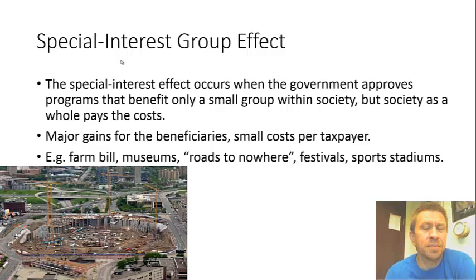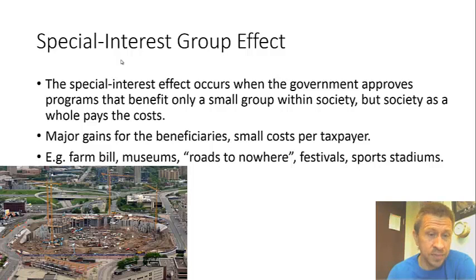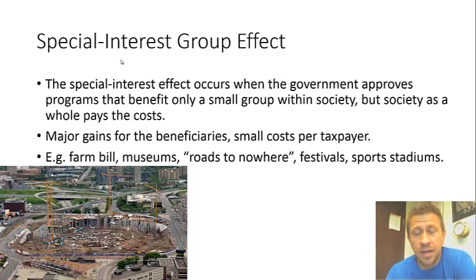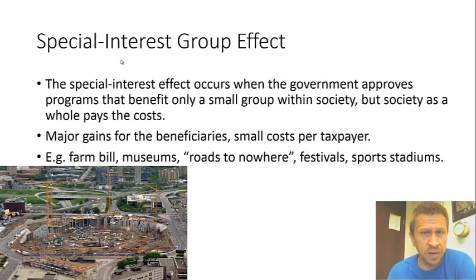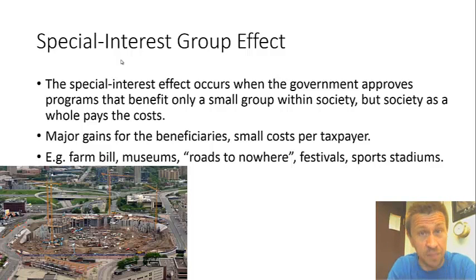You can look at things like the Farm Bill, museums that are funded, Alaska's famous Road to Nowhere, festivals that are sponsored by the government, and sports stadiums — tax dollars fund a lot of sports stadiums, and that's what the picture shows: construction on a sports stadium at the bottom of the screen. Huge gains go to the beneficiaries, but the net value to society of almost all these special gifts from the government are certainly negative. There's no good value to the government getting involved here. These are things that if the private market wanted them, they would have done them on their own.